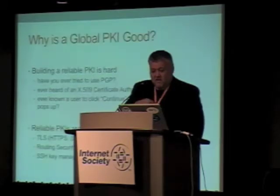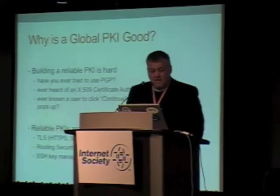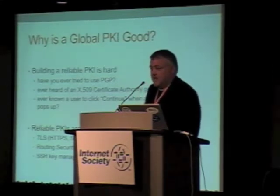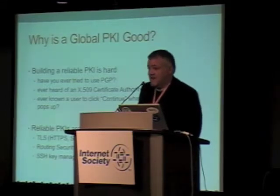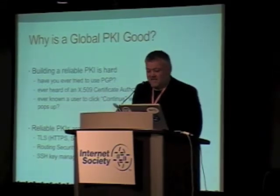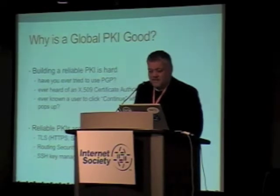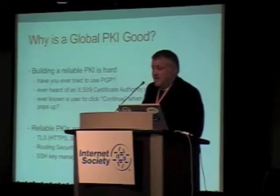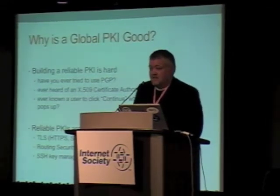So there are some examples here. Opportunistic TLS between SMTP servers. The certificates used for securing IMAP and SMTP for submission and for reading mail. HTTP, routing security potentially. These are early days, perhaps trivial examples, but they exist. RPKI has a different model for sharing keys, but more PKIs are good.